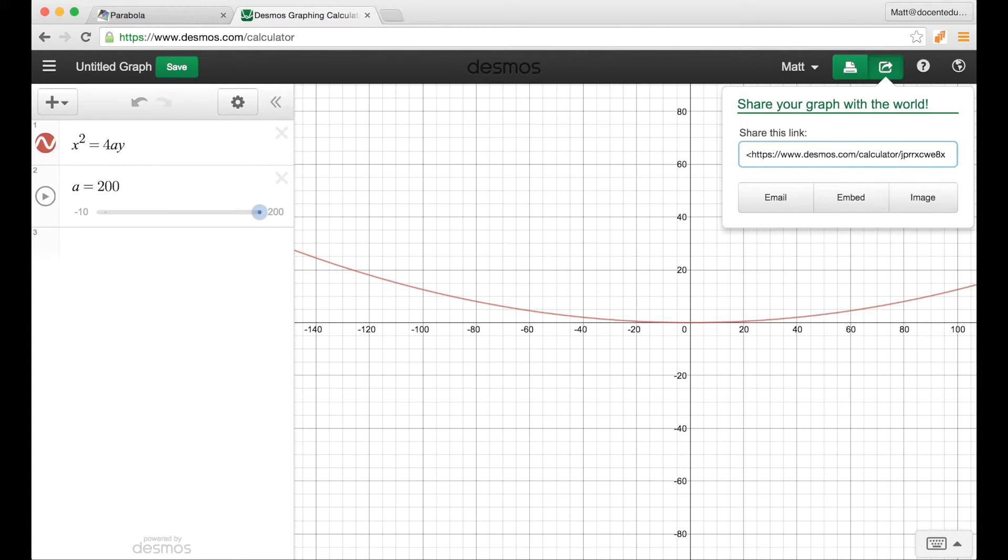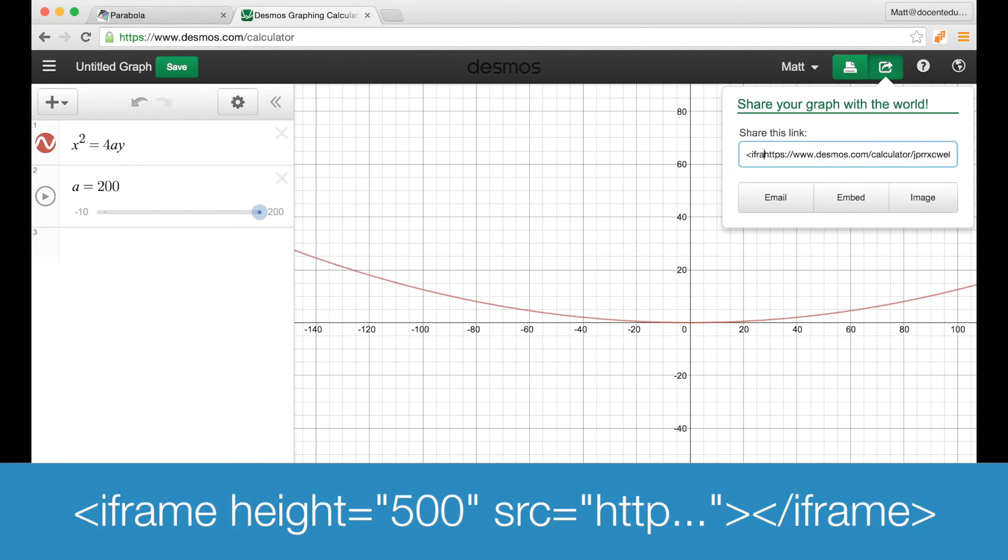So open bracket and we're going to type in iframe. We're going to set a height so height is equal to parenthesis 500 so this will be 500 pixels high if you want it to be shorter you can obviously change that or taller. And then src that stands for source so src equal double parenthesis. And now if you press the up arrow on your keyboard the cursor goes to the beginning. I'm going to press the down arrow on the keyboard so it goes to the end.